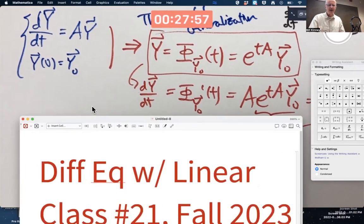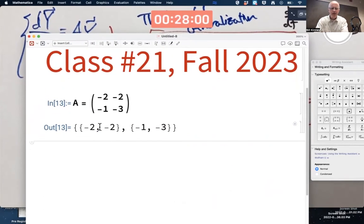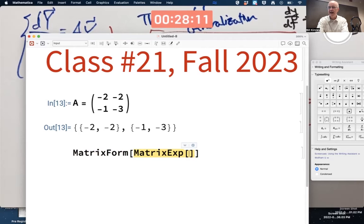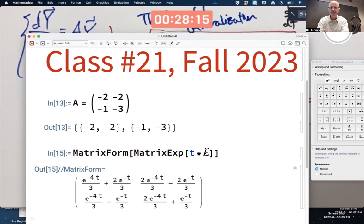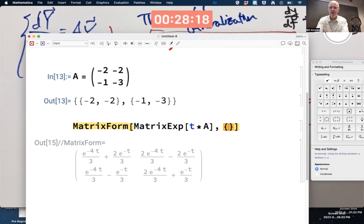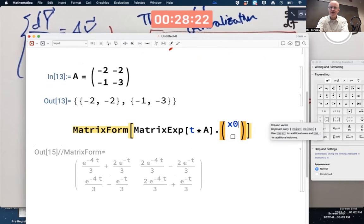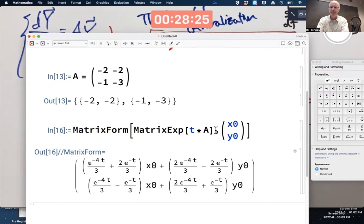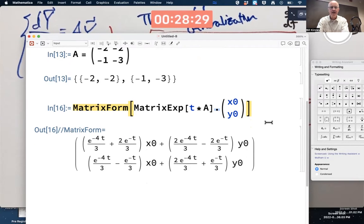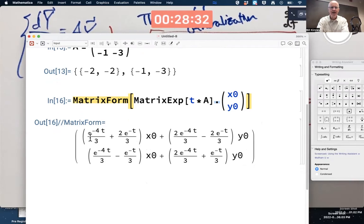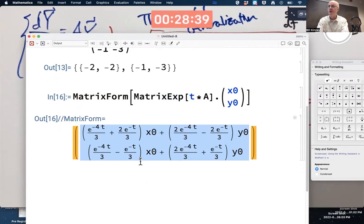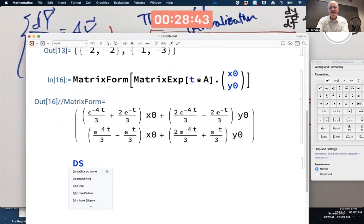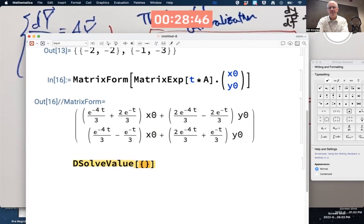Can we confirm this? What would happen if I use Mathematica? Again, matrix form just makes the output look like a matrix. MatrixExp will compute the matrix exponential. I could do that for A itself, but I'm interested in t times A. And I'm also interested in multiplying that by an arbitrary initial condition vector. x_0, y_0. The dot means matrix multiplication. It's not a star. I claim this is the matrix exponential of t times A times your initial condition. I claim this is the unique solution to that arbitrary initial value problem. What's a way we could confirm that? How about with DSolveValue?